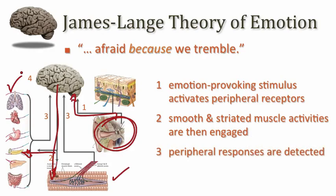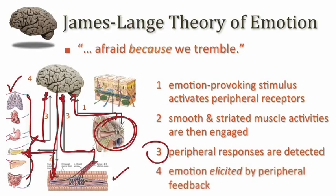This would lead to a secondary sensory event, where peripheral responses of these effector systems would be detected and sent back into our relevant sensory divisions of the brain — principally the somatic sensory cortex and our visceral sensory cortex in the insular regions. These would be integrated, and it would be the integrated perception of this secondary sensory feedback that triggers the emotion.